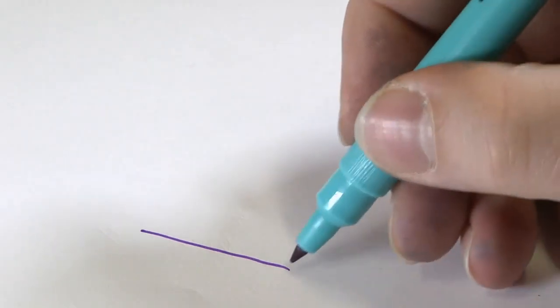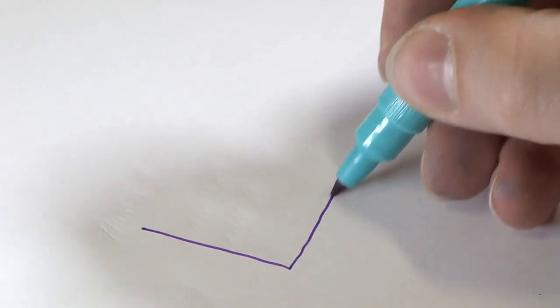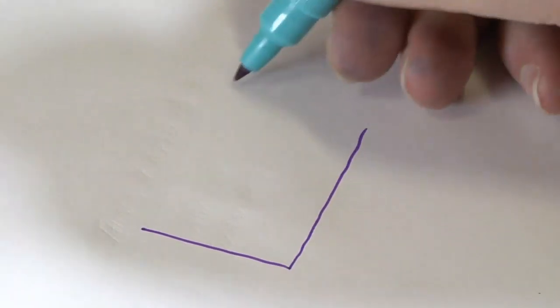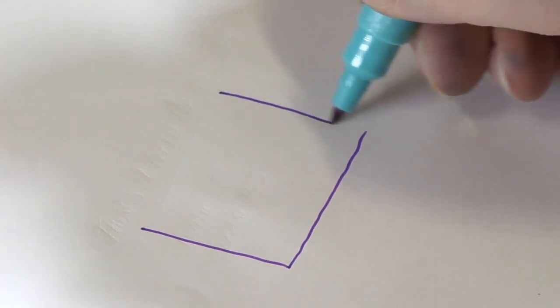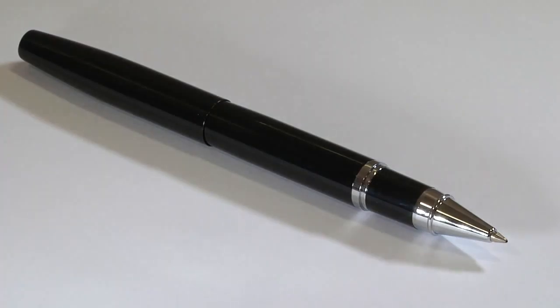Nevertheless, the swinging 60s saw the introduction of two new types of pen: the porous tip, more commonly known as the felt tip pen in 1962, and the roller ball pen in 1968, both of which contain water-based fluid ink.